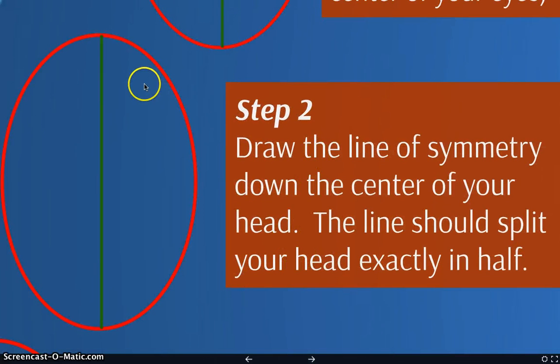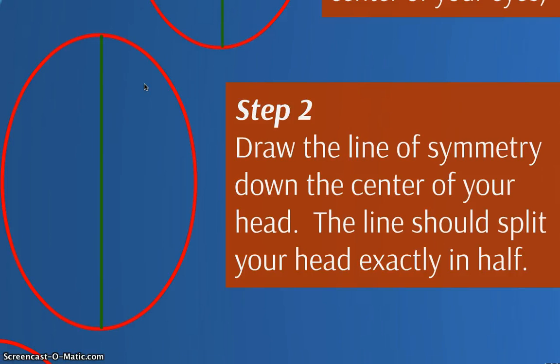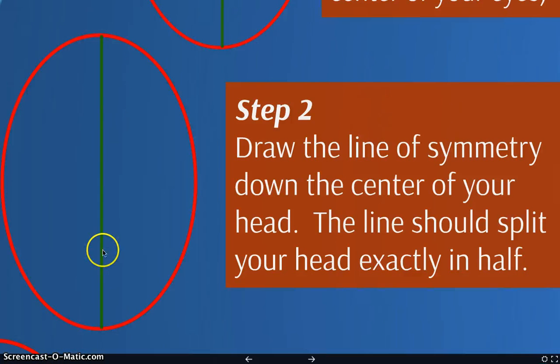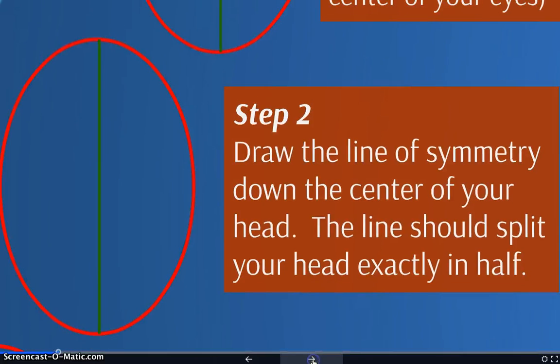Alright, next, our faces are symmetrical. That means they're the same on both sides. So what you need to do is draw a line that splits your head directly in half. So, anywhere in these directions where it says in half, that means exactly halfway, not just randomly somewhere in the middle. So you can measure using a ruler, you can measure using your fingers, but you need to make sure that this line is halfway across your oval.